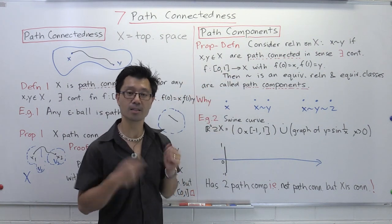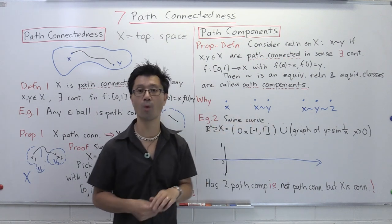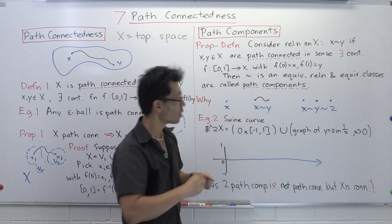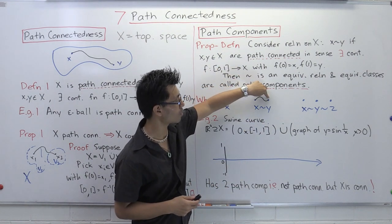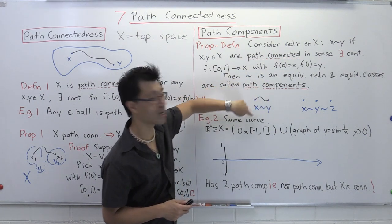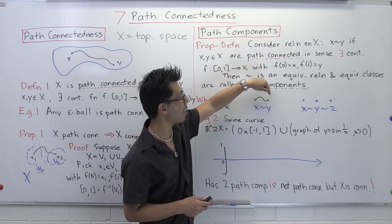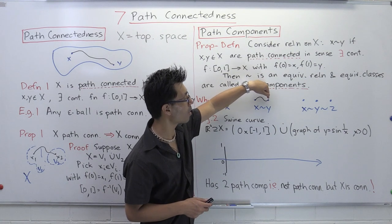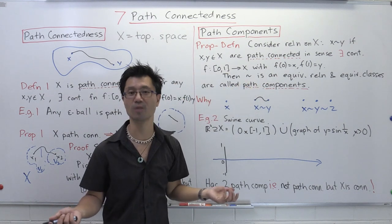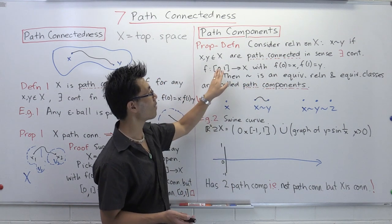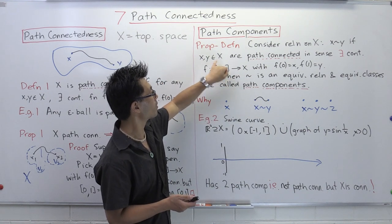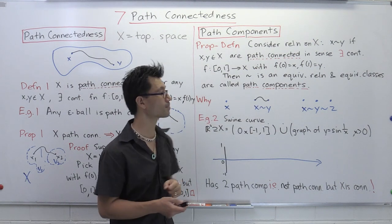For symmetry, suppose x is related to y, so there's a continuous function f with f(0) = x and f(1) = y. We want to show y is related to x. We basically travel along the path in reverse: instead of f(t), look at g(t) = f(1 − t). This starts at y and ends at x, so y is related to x.